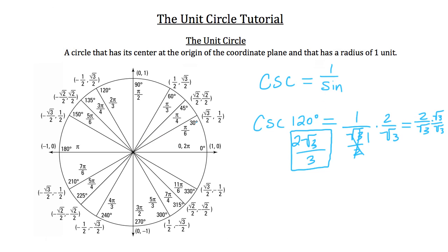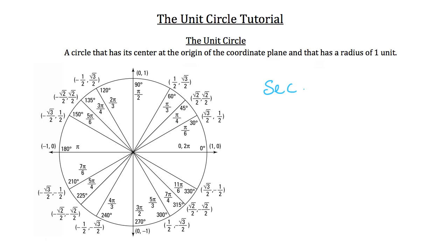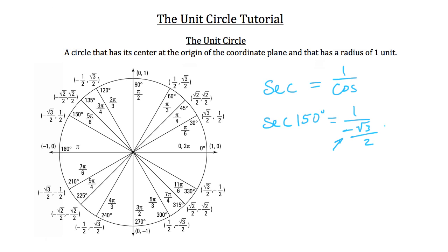The secant value is found by taking 1 divided by cosine. For example, the secant of 150 degrees is 1 over the cosine of 150 degrees, which is negative root 3 over 2. You follow the same rationalization steps as with cosecant, but the answer is negative this time. So the secant of 150 degrees is negative 2 root 3 over 3.